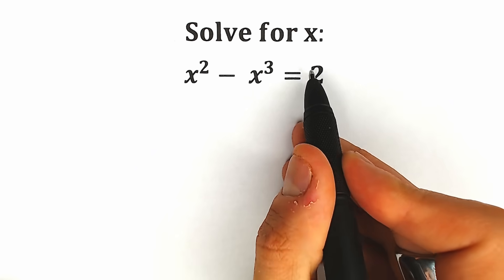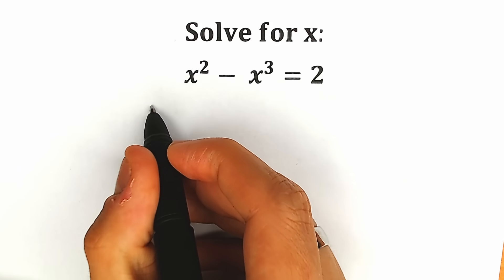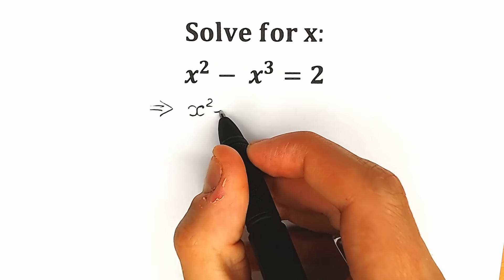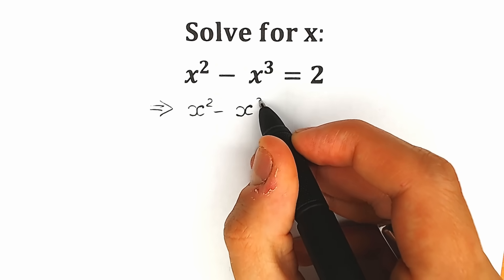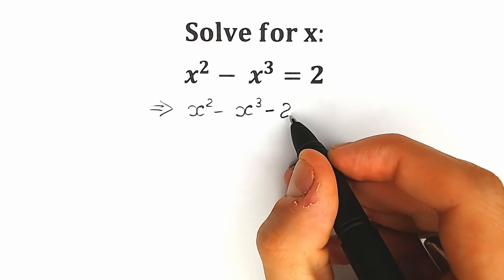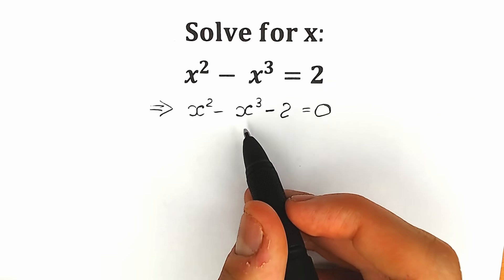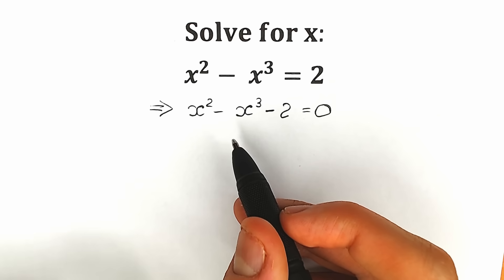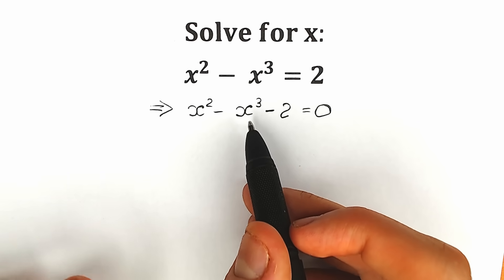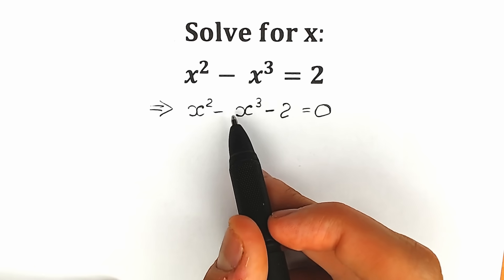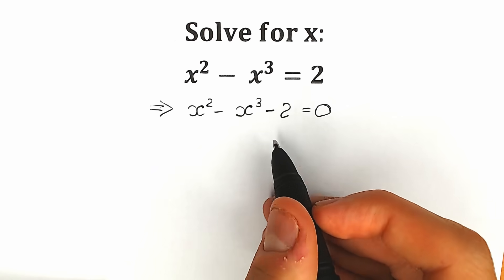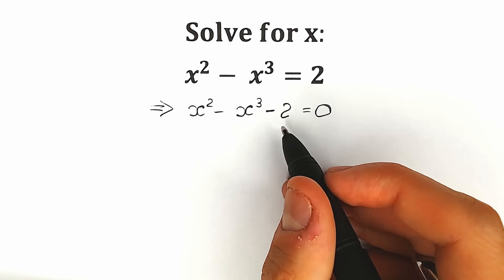First of all, let's subtract 2 from both sides. As a result, on the left side we have x squared minus x cubed, and we get minus 2 from the right side, so we have minus 2 equal to 0. This is a cubic equation, but we prefer a different order: x cubed minus x squared minus 2. Now, instead of 2, let's write 1 plus 1.